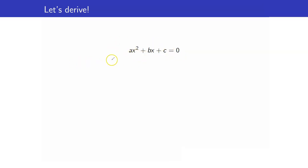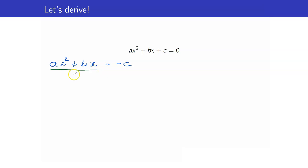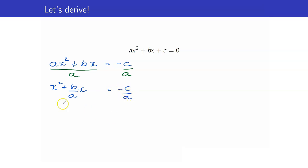We will use completing the squares to solve for x. What is the first step? We isolate the constant. Since the coefficient of x squared is not equal to 1, what do we need to do? We have to divide both sides by a first. Next, we now get x squared plus b over a times x is equal to negative c over a. And then we will now proceed with our completing the square.